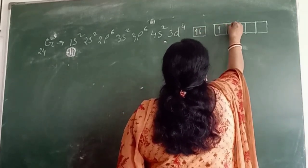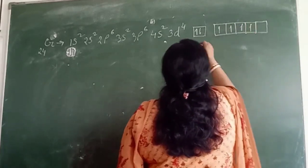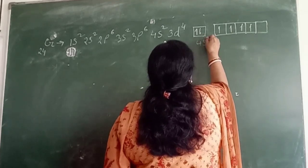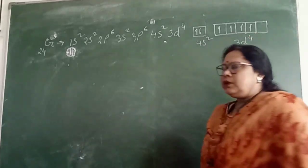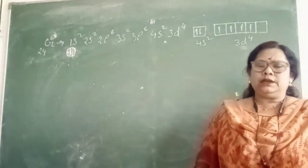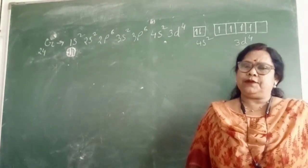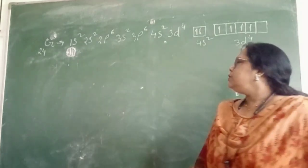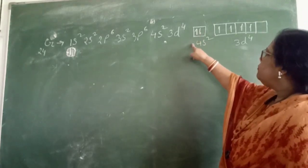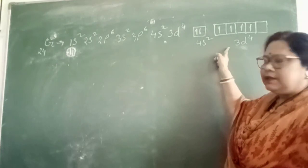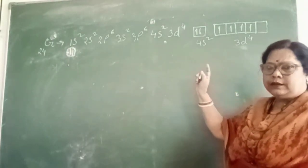Counting the d orbital electrons: 1, 2, 3, 4. We know half-filled and completely filled d orbitals are more stable than partially filled d orbitals. If we shift one electron from the 4s subcell to the 3d subcell, then the 3d subcell acquires a half-filled and more stable position.